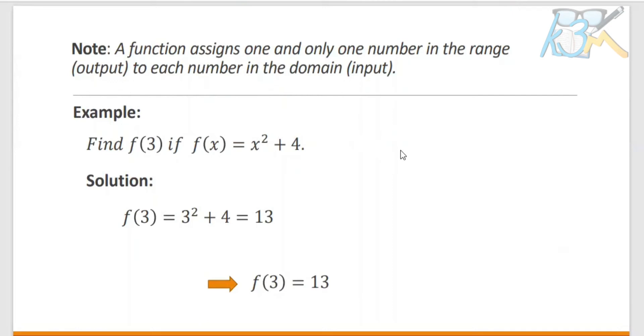For example, find F of 3 if F of X equals X squared plus 4. For our solution, our X here is equal to 3 and we will just substitute 3. So we got 3 squared plus 4. So 3 squared is 9 plus 4 equals 13. So you can indicate that 13 is the number the function assigns to 3, and we can write it as F of 3 equals 13.